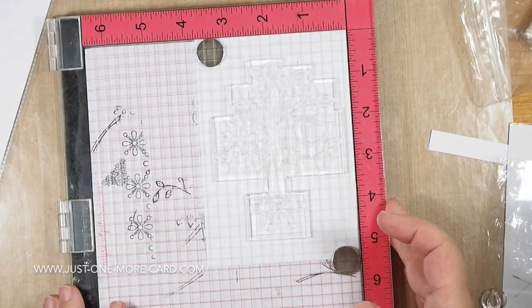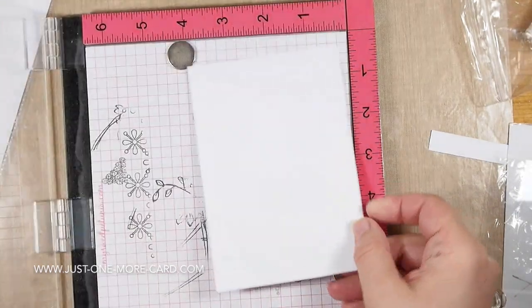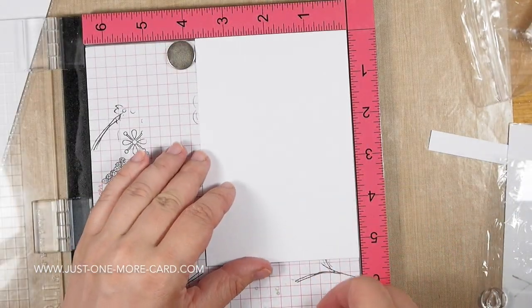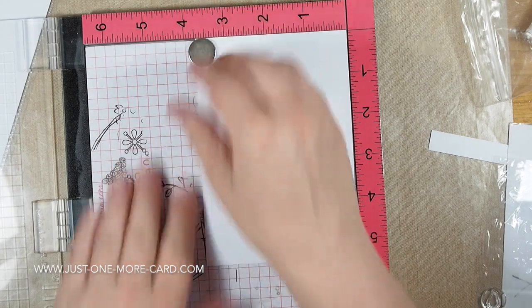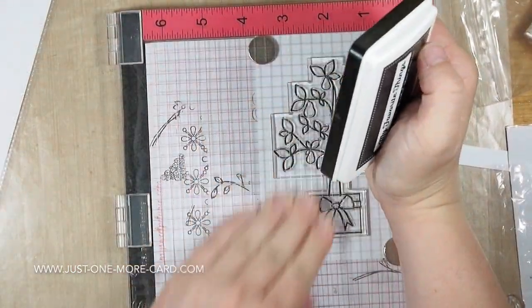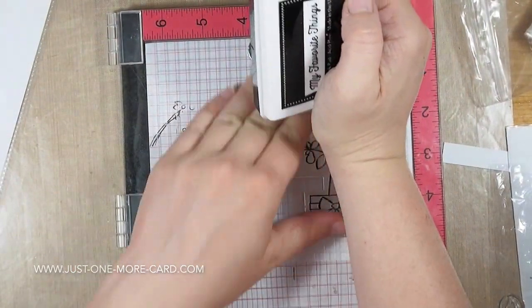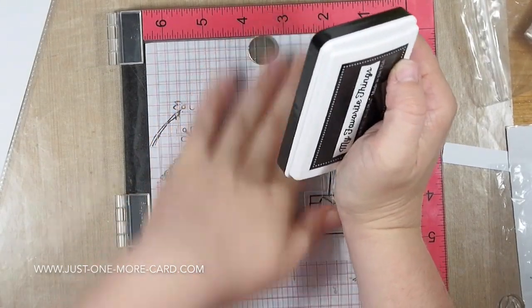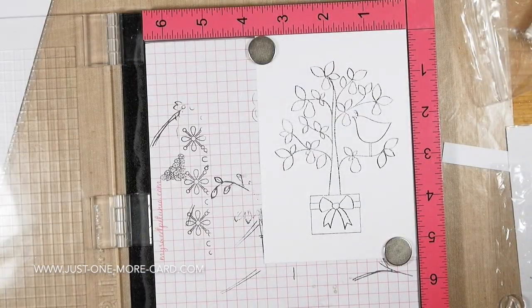The good thing here, if this ever happens to you, if you pull it out like the card base, just make sure you mount it flush into the corner. Then when you pull it out and it sticks to the stamp, you can just put it back and the stamp will still go where it needs to go.